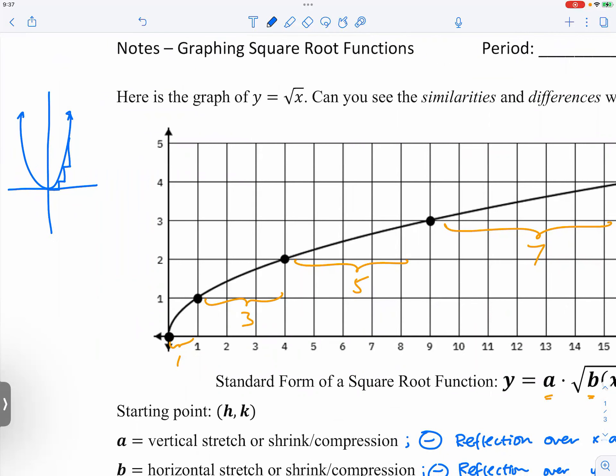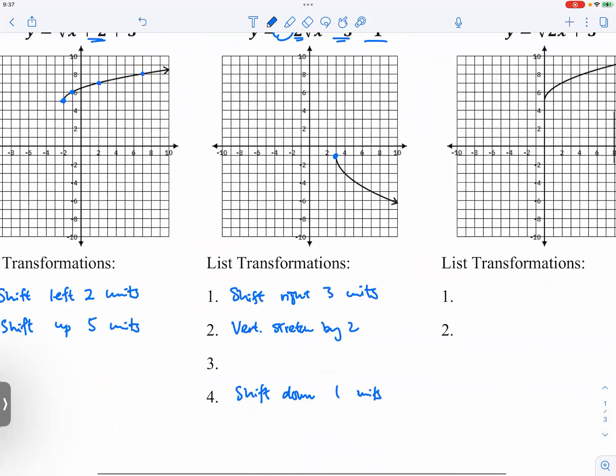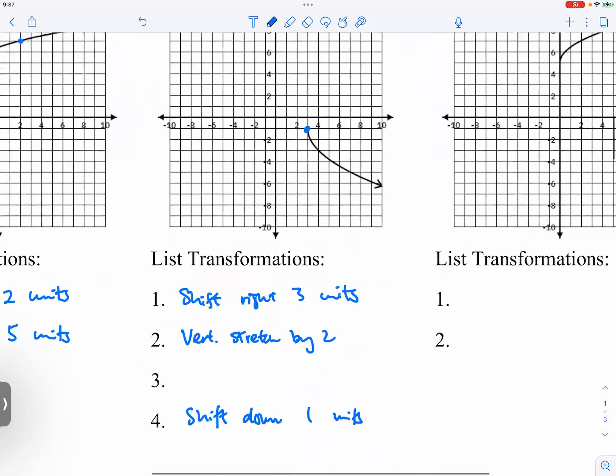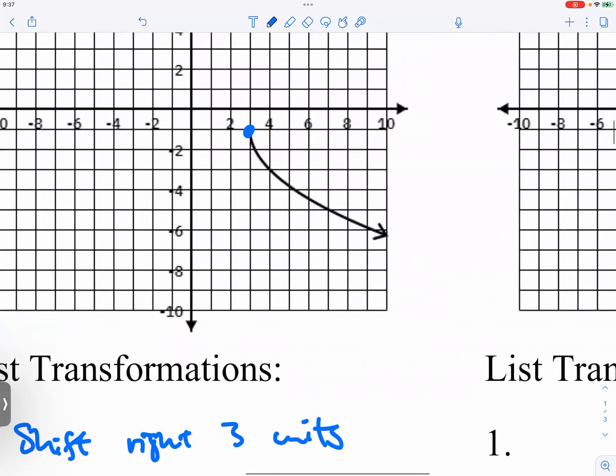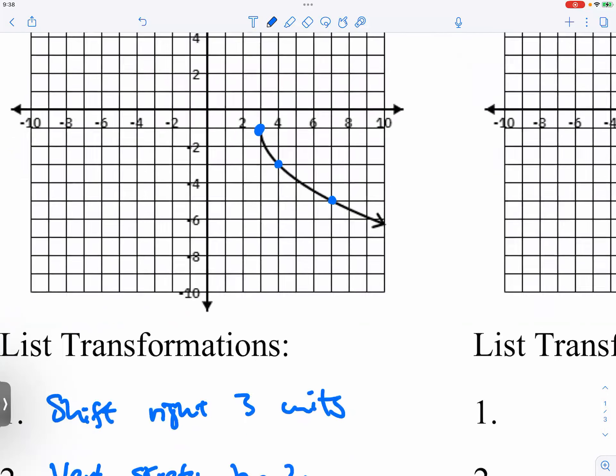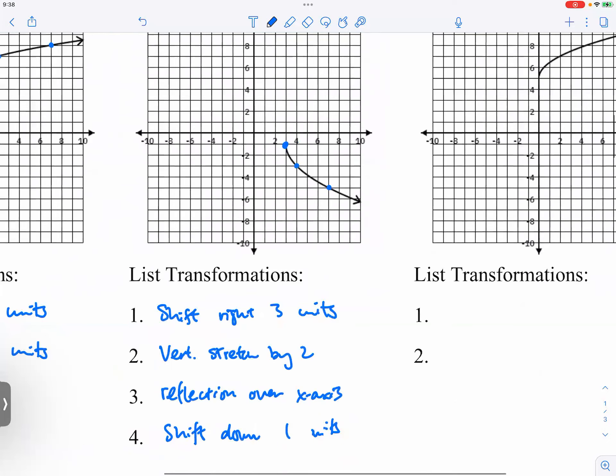But now because of the negative, it's being reflected - a reflection over the x-axis. So that's why we would go down. And when we go down, it's not one unit, we go down by two units. So we'll still go to the right by one, three, and five, but as we go down, it's going to be two units every single time.